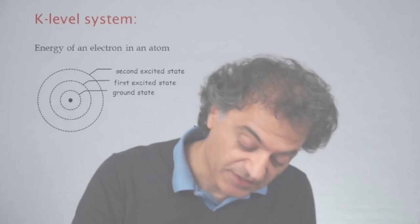So if this electron were a classical system, then it could store one of k pieces of information, which we might denote by 0, 1 through k minus 1.